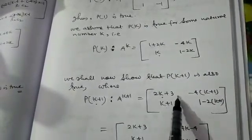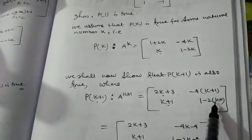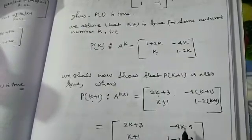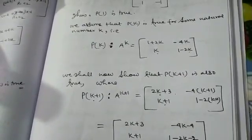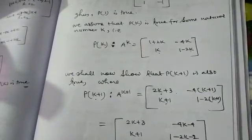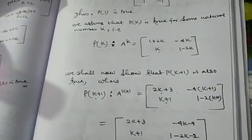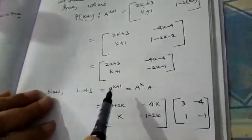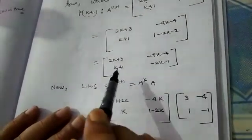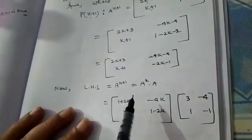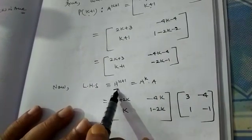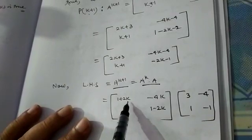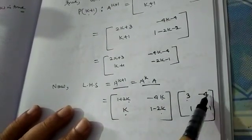Now, by considering the result true for A to the power K, we have to prove it for K plus 1. For N equal to K plus 1, the expected result is [[2K+3, -4(K+1)], [K+1, 1-2(K+1)]], which simplifies to [[2K+3, -4K-4], [K+1, -2K-1]]. Instead of K, we put K plus 1, and now we write the left-hand side: A to the power K plus 1 equals A to the power K times A.